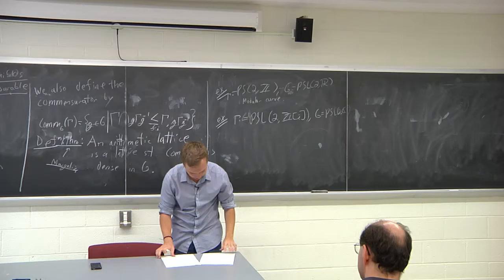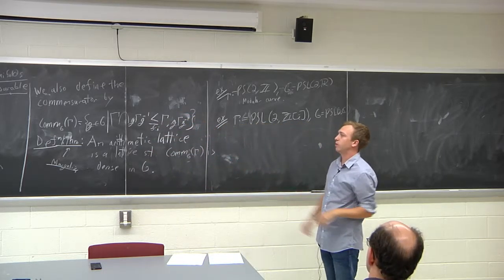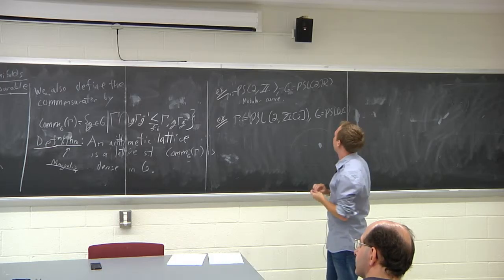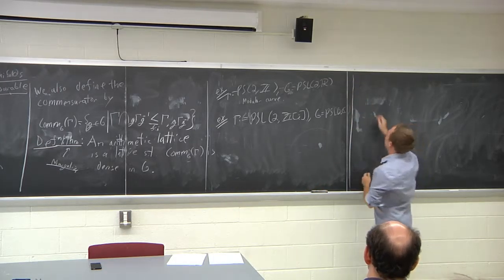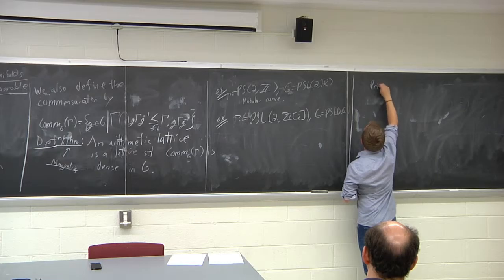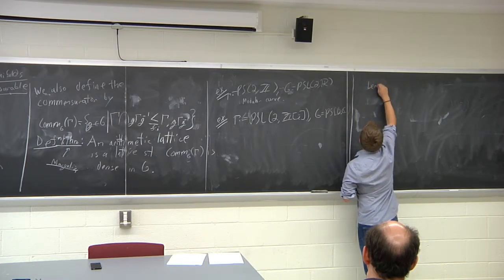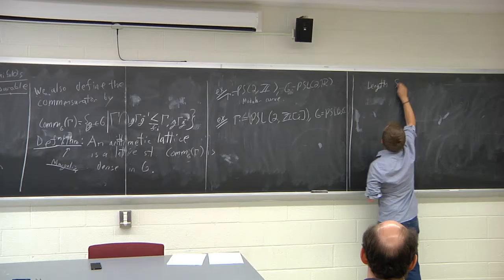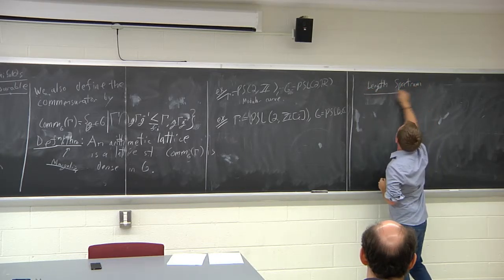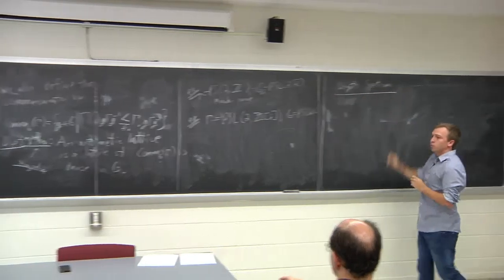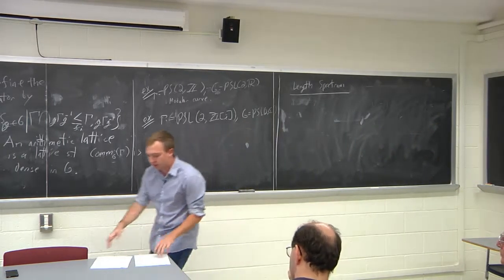So those are the first key players: arithmetic manifolds, these highly symmetric things. The second player in this talk is going to be the primitive length spectrum, or the length spectrum in general. Before we get there, let's briefly recall some facts about geodesics.